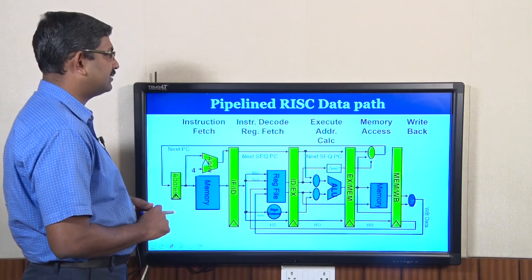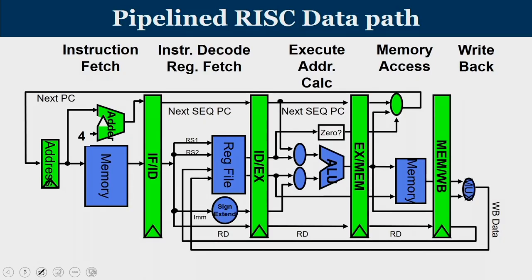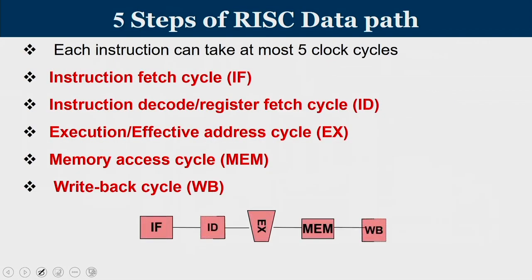This is the 5-stage RISC datapath consisting of instruction fetch, instruction decode, execute, memory access, and write back. In instruction fetch, we work on the program counter value and go to memory to fetch the addressed word. In decode, we identify operands and opcodes, and register source operands are read into the pipeline register. In execution, arithmetic operations are performed; for load or store, effective address calculation takes place. The MEM stage is used only for loads and stores to access memory, and the last stage writes results into registers.